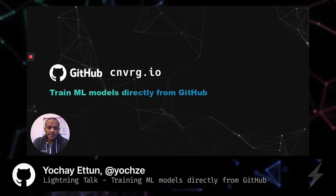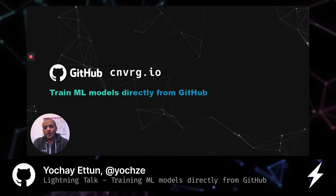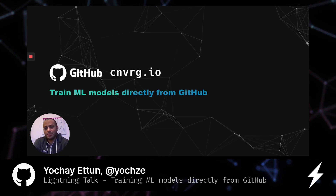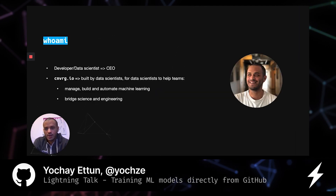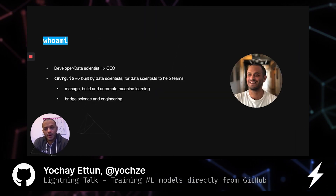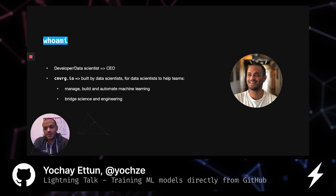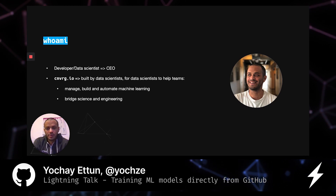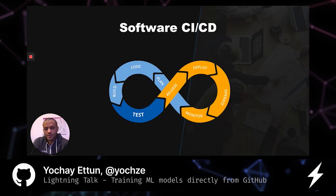Hi, in this talk I'm going to show you how you can train machine learning models directly from GitHub. My name is Yochai and I'm co-founder and CEO of Converge, a machine learning platform that is built to help data scientists build and deploy models to production.